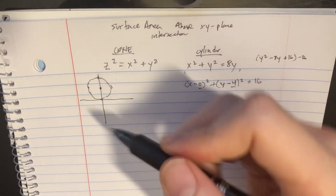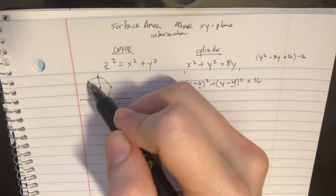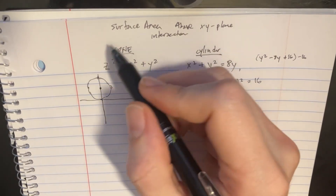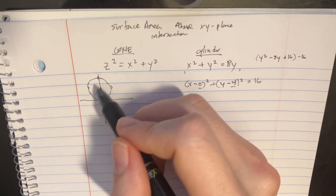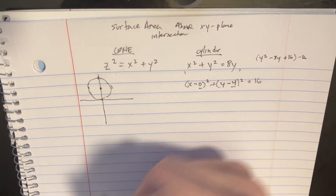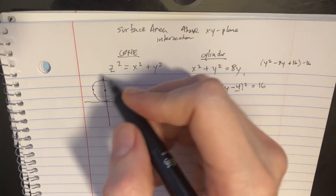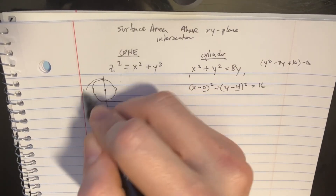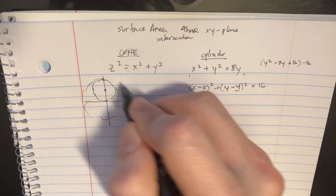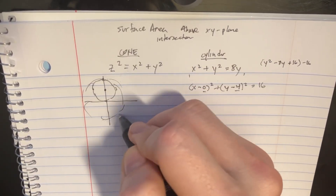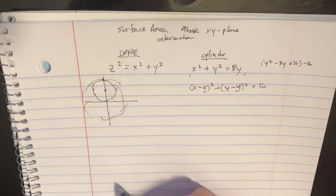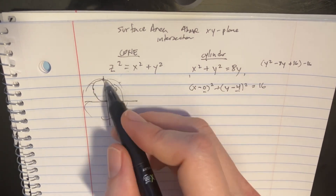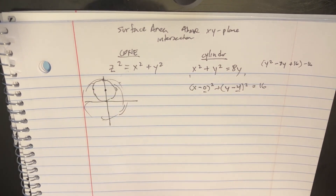This cylinder is going to go all the way up and it's going to encounter this cone, which we assume is this big round shape going up and intersecting with it somehow.